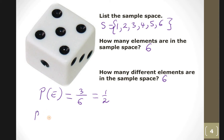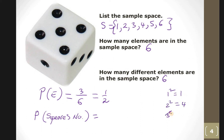What is the probability of getting a square number? Square numbers: one squared is one, two squared is four, three squared is nine — but nine is beyond six, so the square numbers present are one and four. That's two out of six, which simplifies to one third.